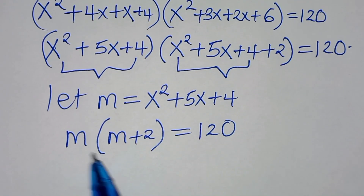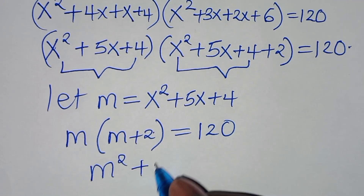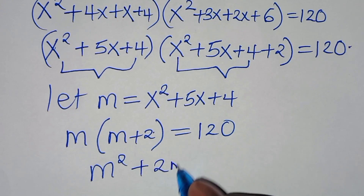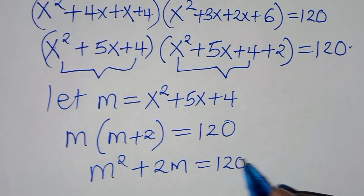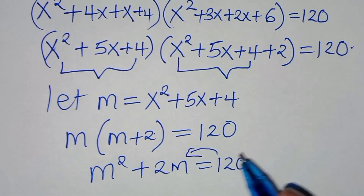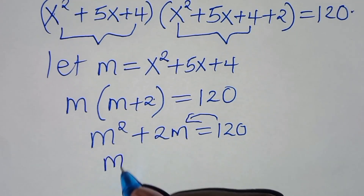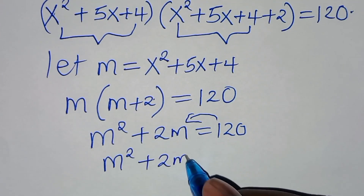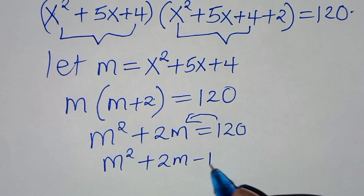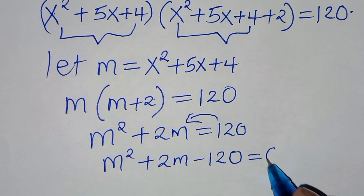Expanding, m times m is m², plus 2 times m is 2m, so m²+2m = 120. Taking 120 to the left-hand side: m²+2m-120 = 0.